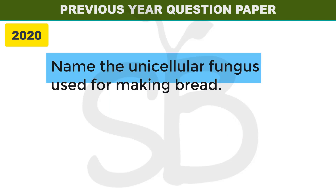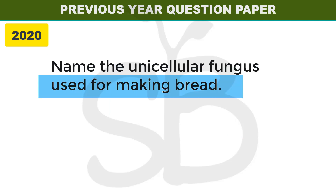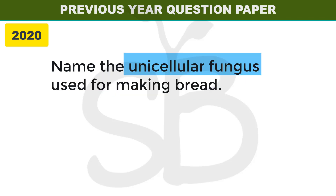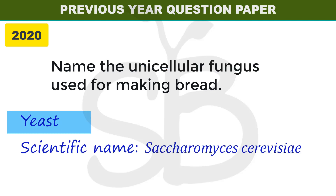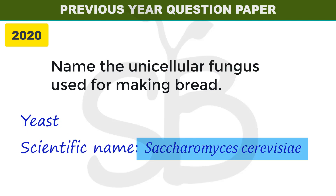Name the unicellular fungus used for making bread. Bread making is done with the help of a unicellular fungus. What is it? It is yeast. The scientific name of yeast is Saccharomyces cerevisiae.